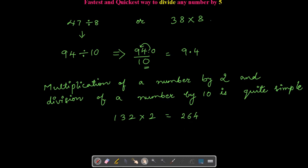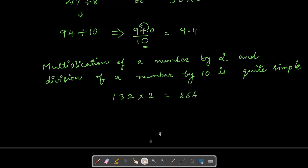So now what we'll be doing is we will be trying to divide a number with 5. So let me say if I'm having an example, let's say I have a number 47 divided by 5.